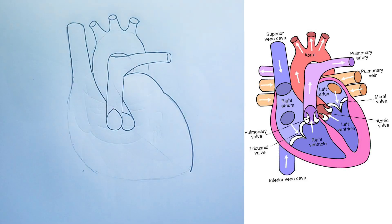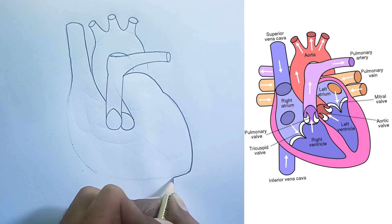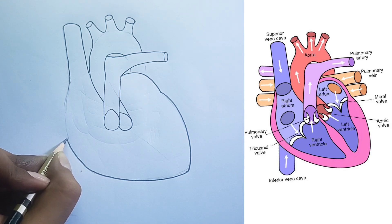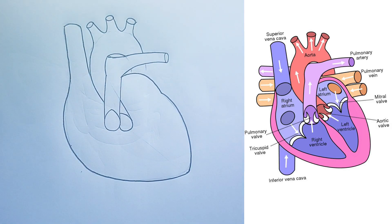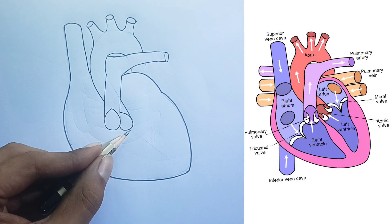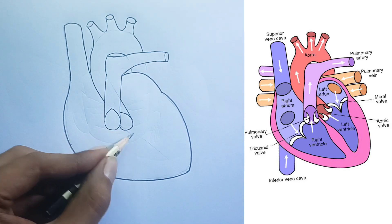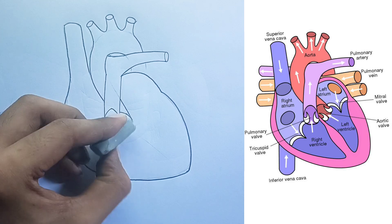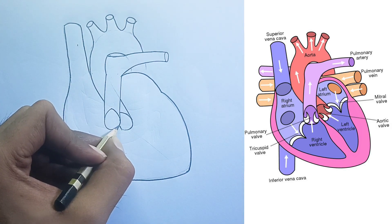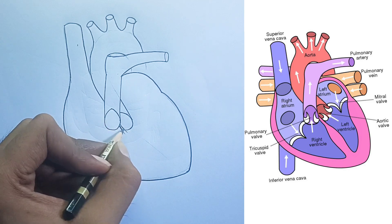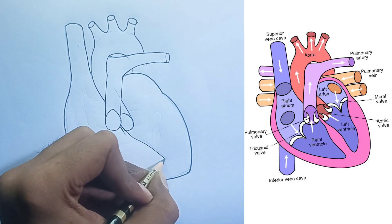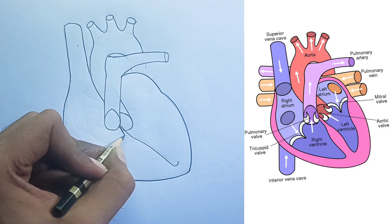The pulmonary valve opens to allow blood to be pumped to the lungs and closes to prevent backflow into the right ventricle. Mitral valve (bicuspid valve): located between the left atrium and the left ventricle. It opens to allow blood to flow from the left atrium into the left ventricle, and closes to prevent backflow during ventricular contraction. Aortic valve: located at the exit of the left ventricle, leading into the aorta. It opens to allow blood to be pumped to the body, and closes to prevent backflow into the left ventricle.